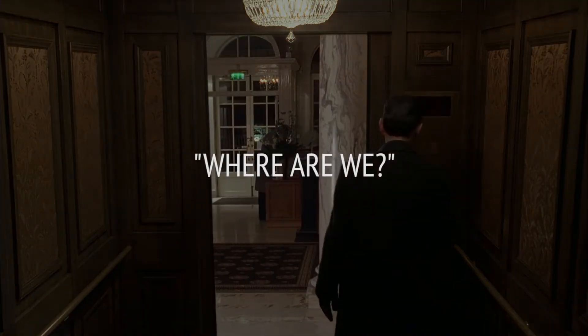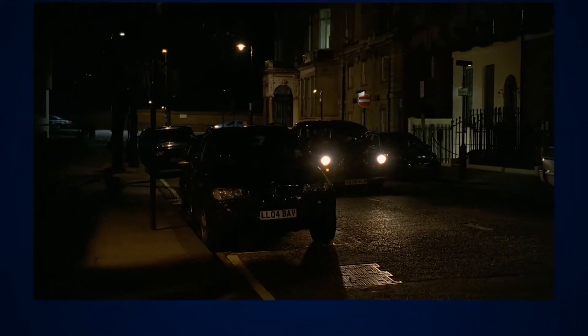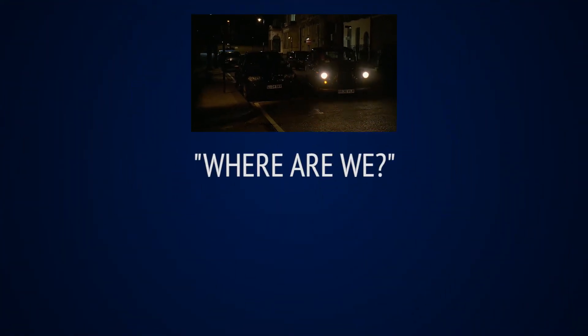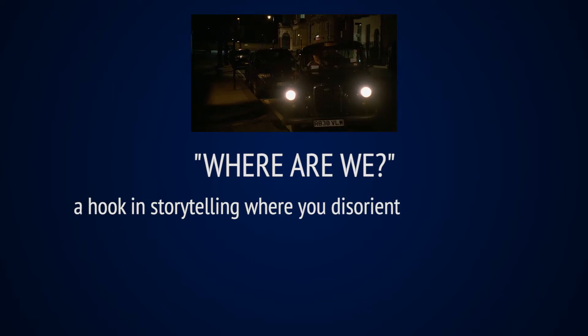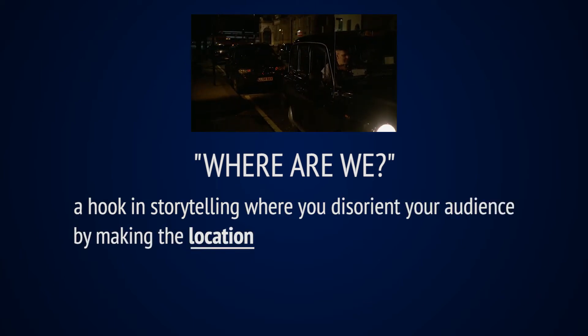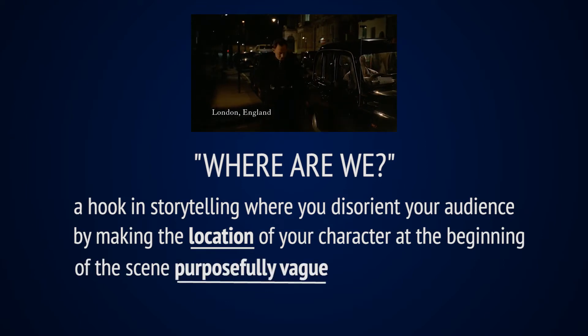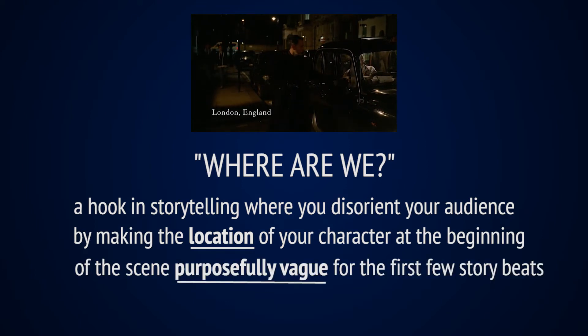It is not until Ben tells him to wake up that we realize Ben is in the apartment of his arch-rival, Charles Widmore. The technique I call 'Where Are We?' is a hook in storytelling where you disorient your audience by making the location of your character at the beginning of a scene purposefully vague for the first few story beats.